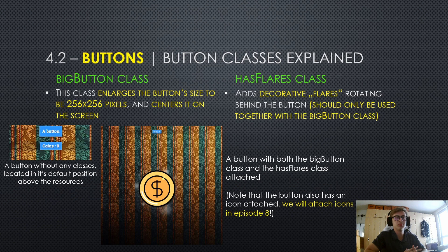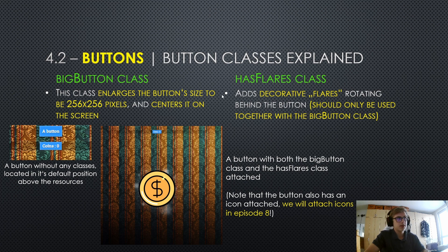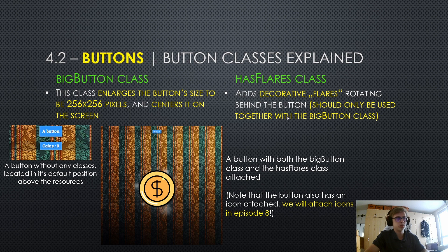Let's now actually mention what those classes do. The big button class enlarges the button size to be 256 by 256 pixels and centers it on the screen. The has flares class adds decorative flares rotating behind the button, and this class should only be used together with the big button class on a button, because otherwise it won't work quite as well.